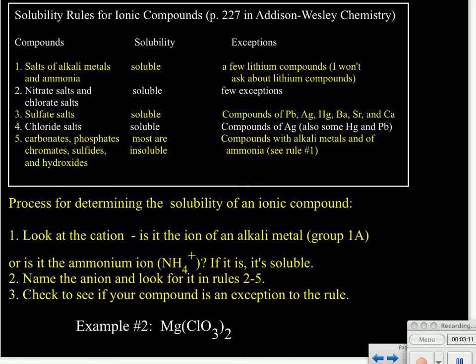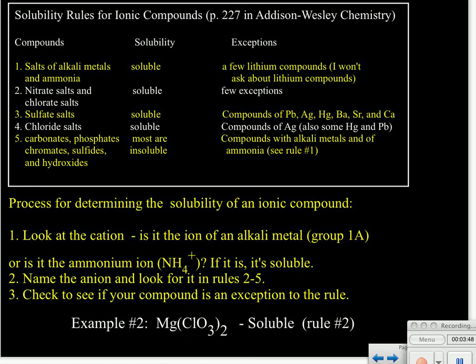Our next example: we look at the first ion in the compound — it's Mg, magnesium. Magnesium is a 2A metal; it is not an alkali metal. Therefore, we have to look at the anion, which is ClO₃⁻ — the chlorate ion. Rule number two says that chlorate salts are soluble. There are a few exceptions, but since the list doesn't specify which ones, for practical purposes this compound will be soluble. You won't need to worry about exceptions for nitrates and chlorates.